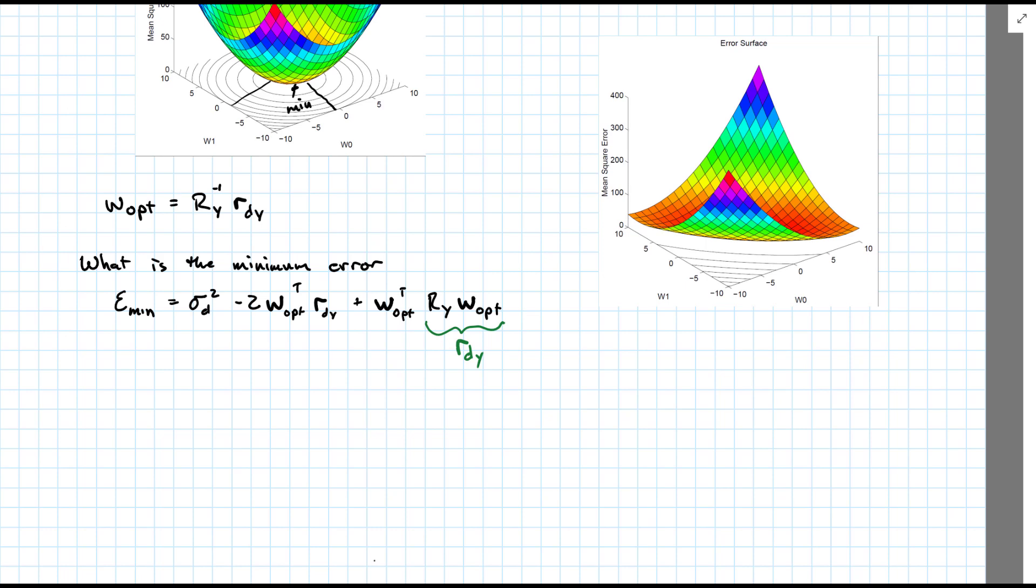And that's simply using the equation, our Wiener equation, which is that r_y w is equal to r_dy.